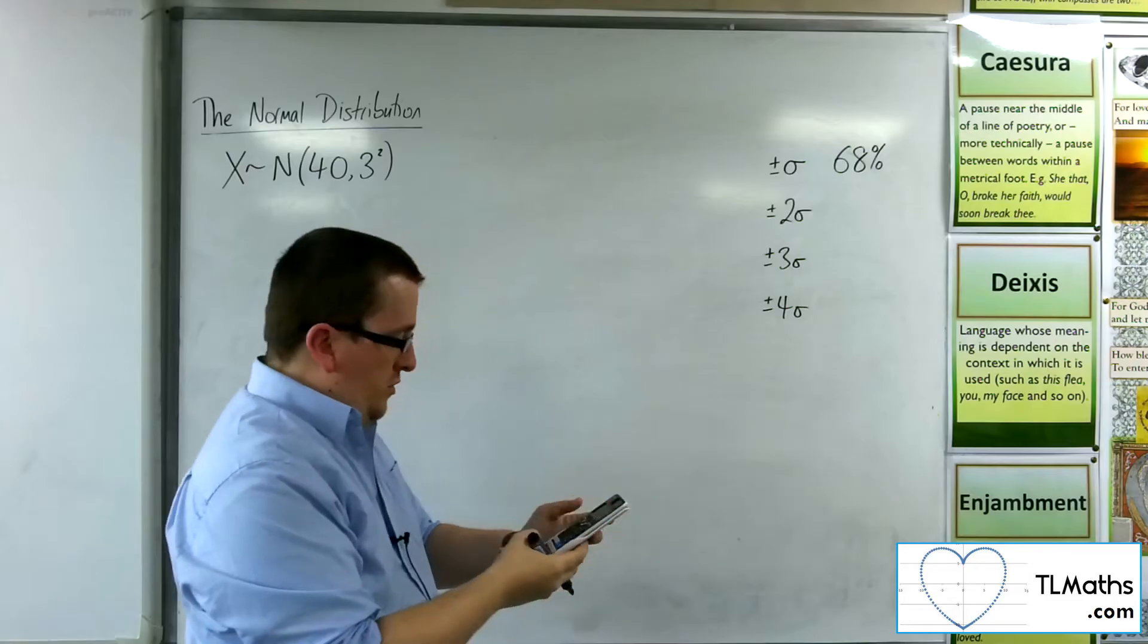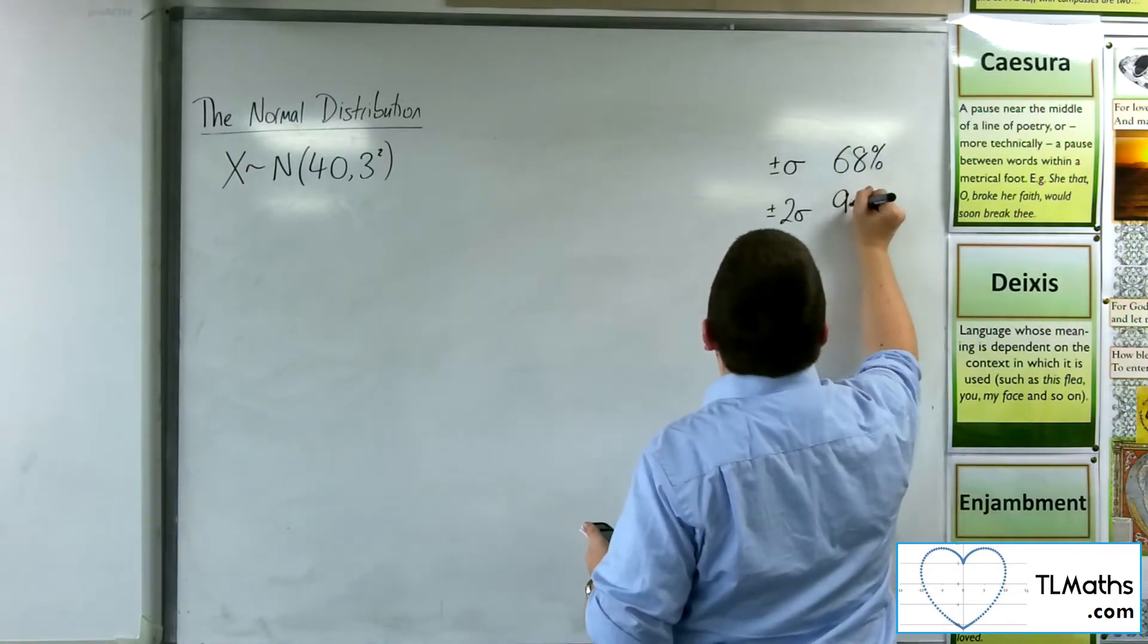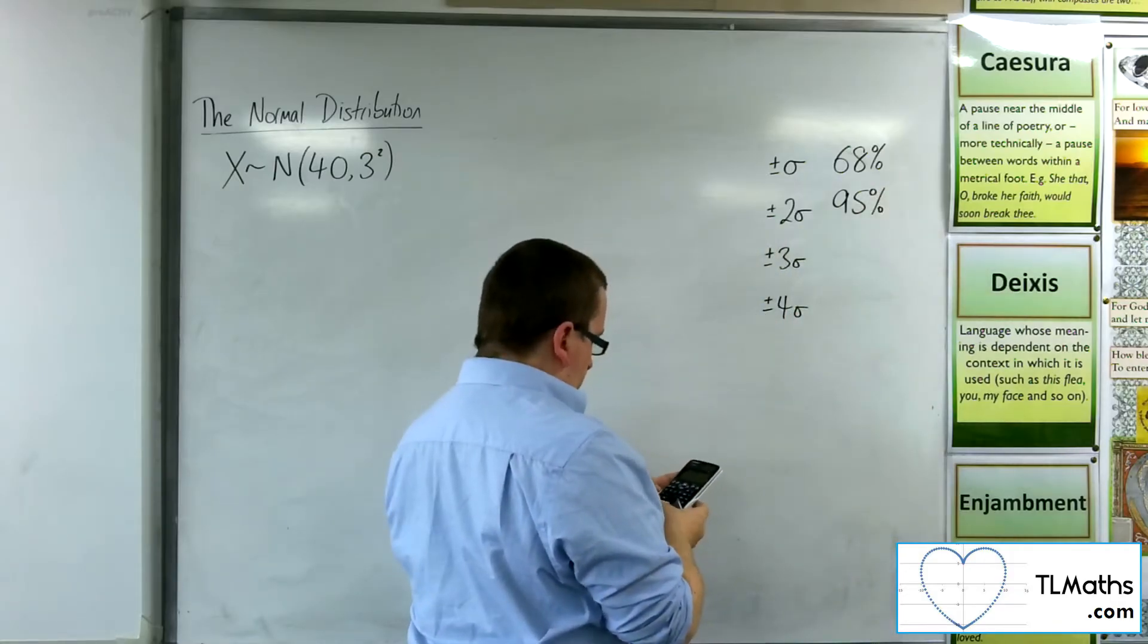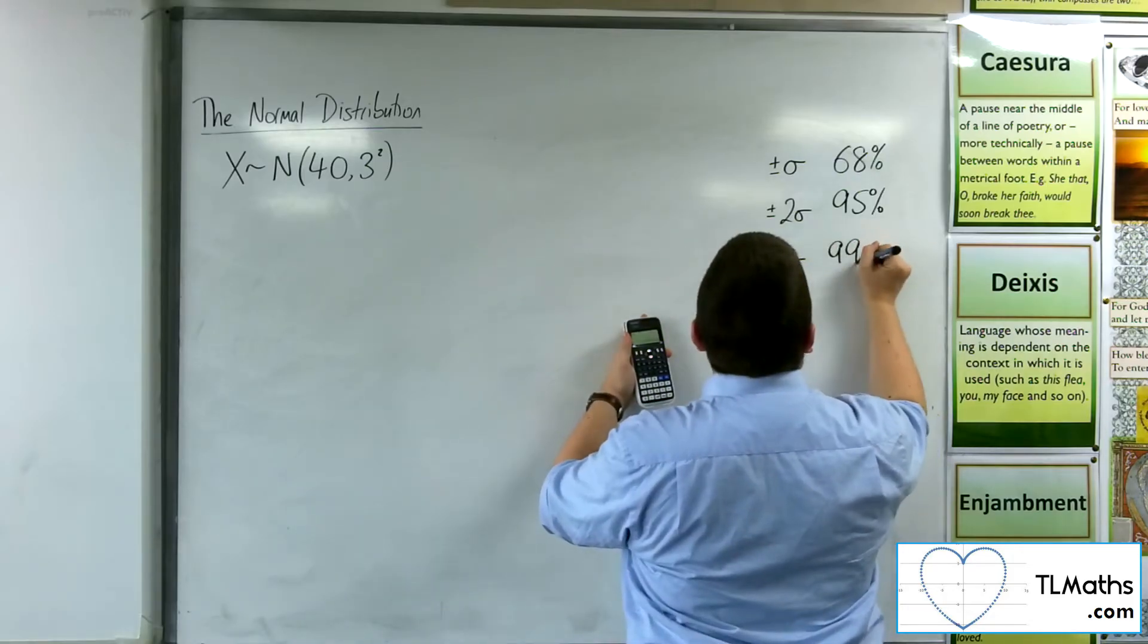If I change it to minus 2 and positive 2, I get the 95%. To three standard deviations, we get 99.7%.